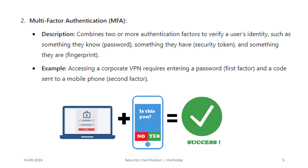A more secure method of authentication is multi-factor authentication, or MFA. MFA combines two or more authentication factors to verify a user's identity, such as something they know — which is the password — something they have, like a security token, or something they are, like a fingerprint. For example, accessing a corporate VPN requires entering a password first, which is the first factor, and then a code sent to a mobile phone, which would be the second factor.